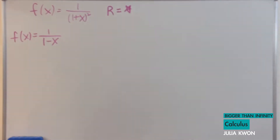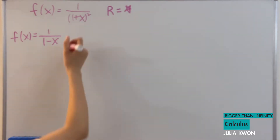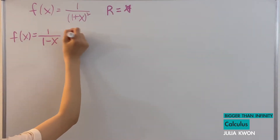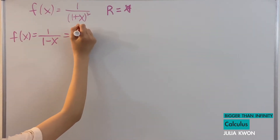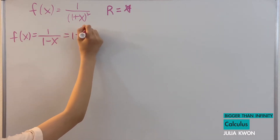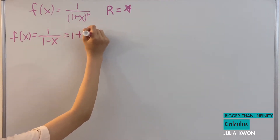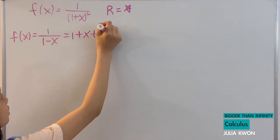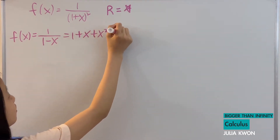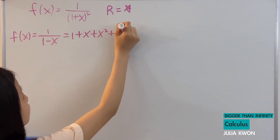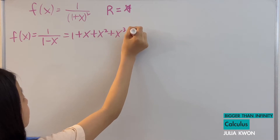So this function, 1 divided by 1 minus x, we know that this is equal to 1 plus x plus x squared plus x to the power of 3 and so on.